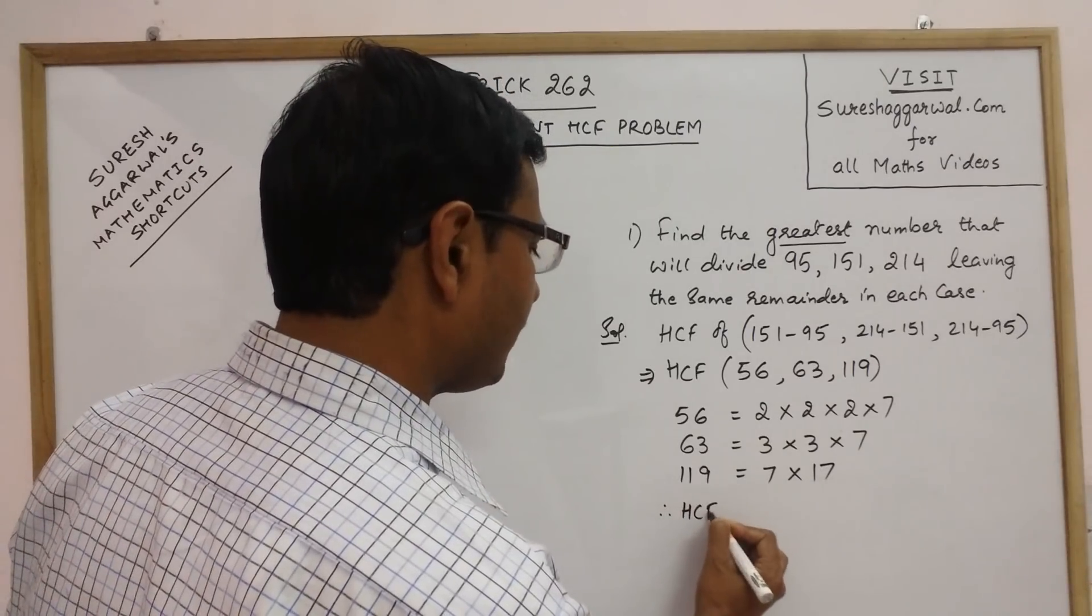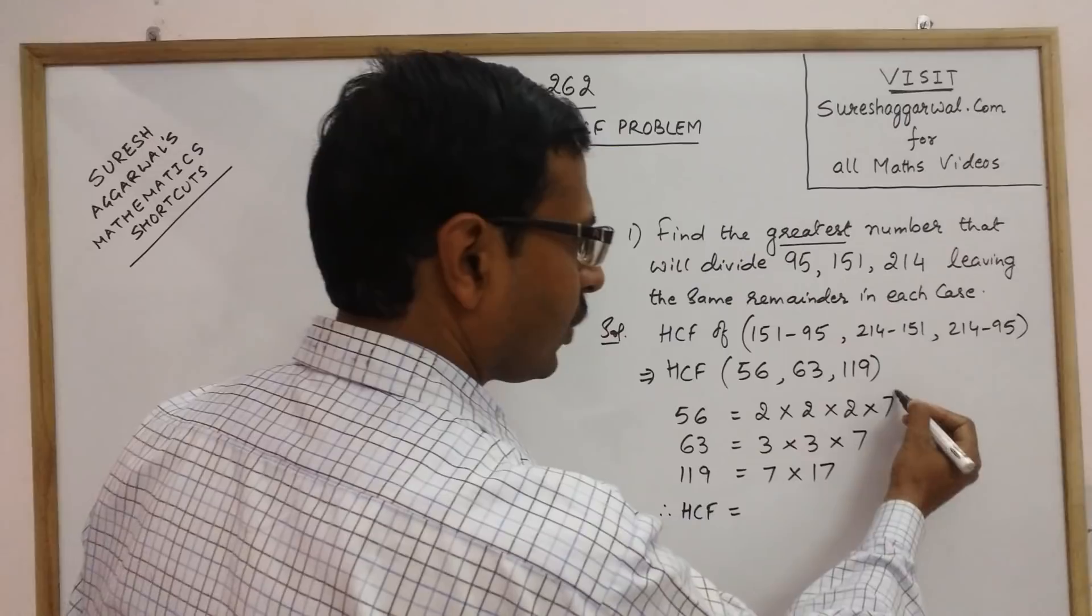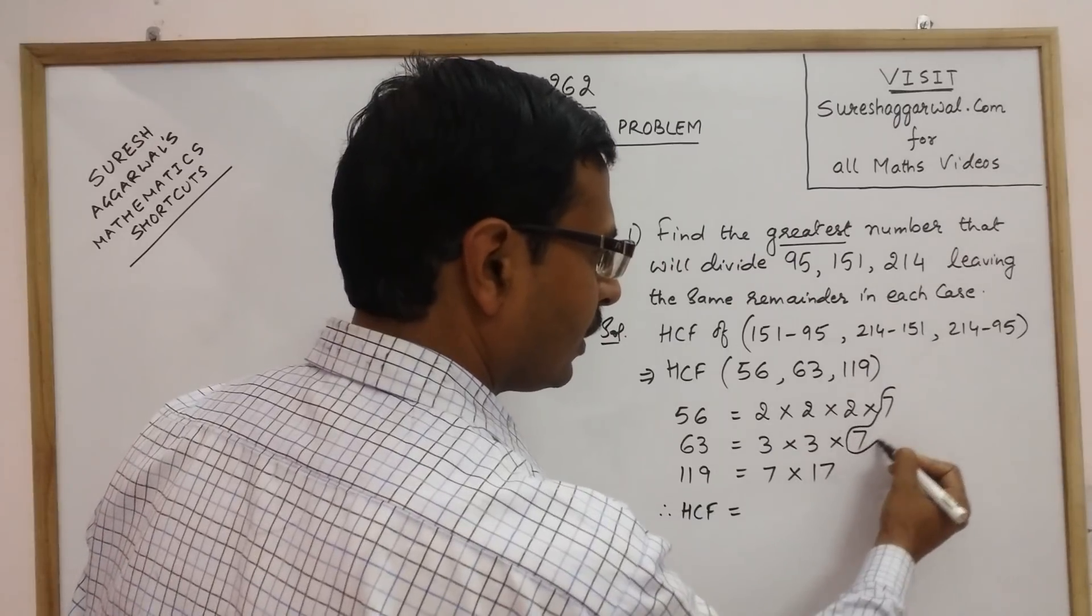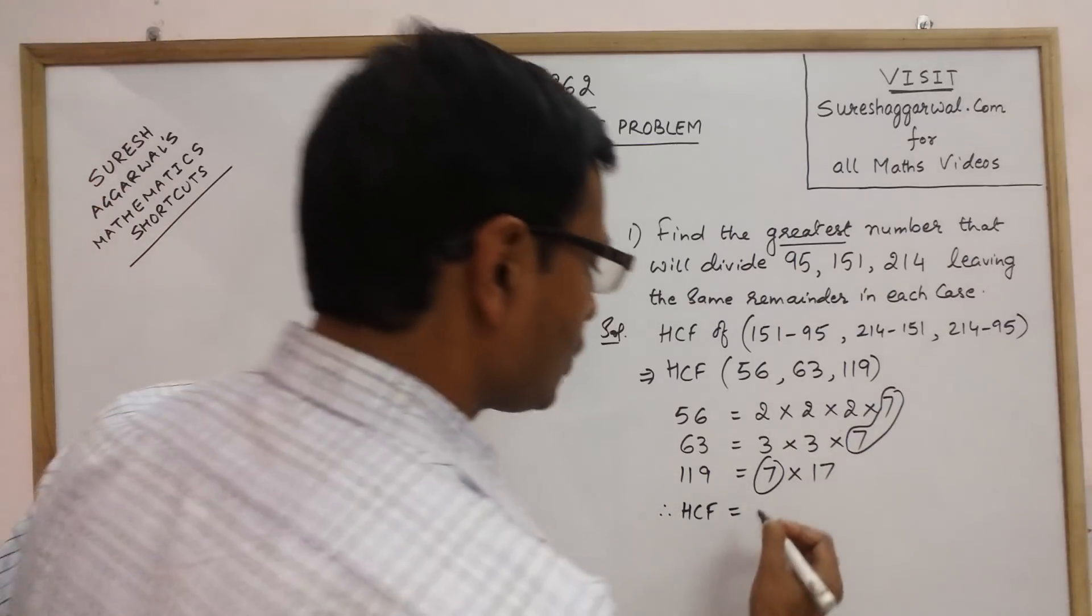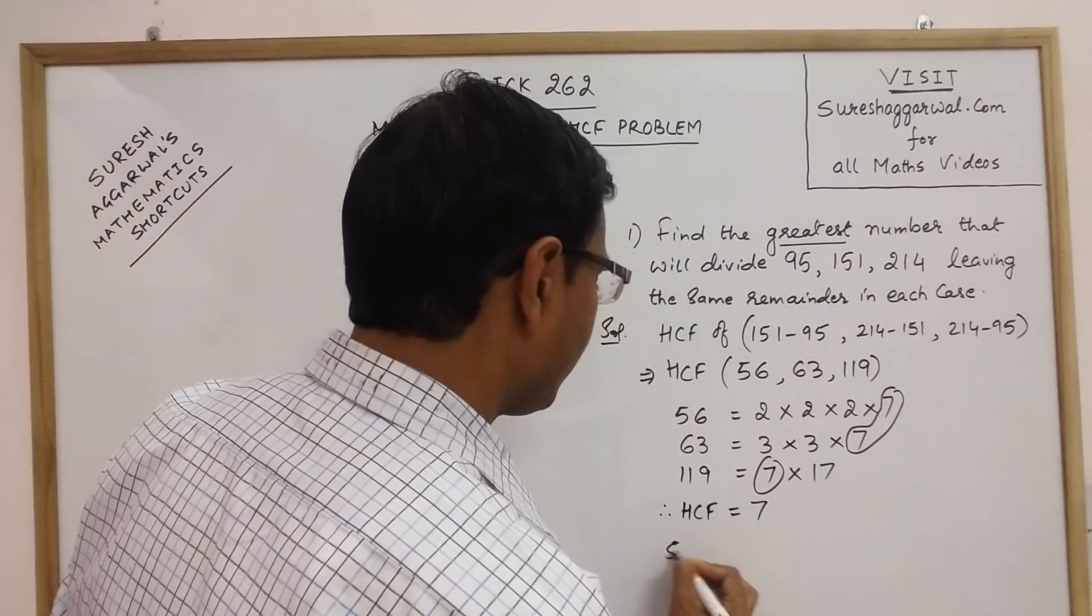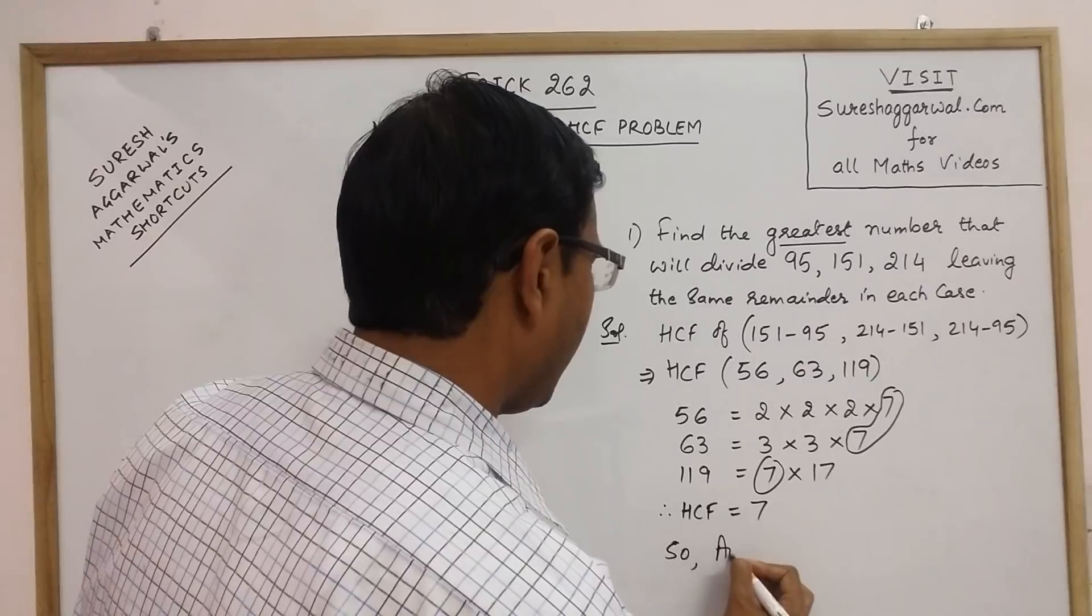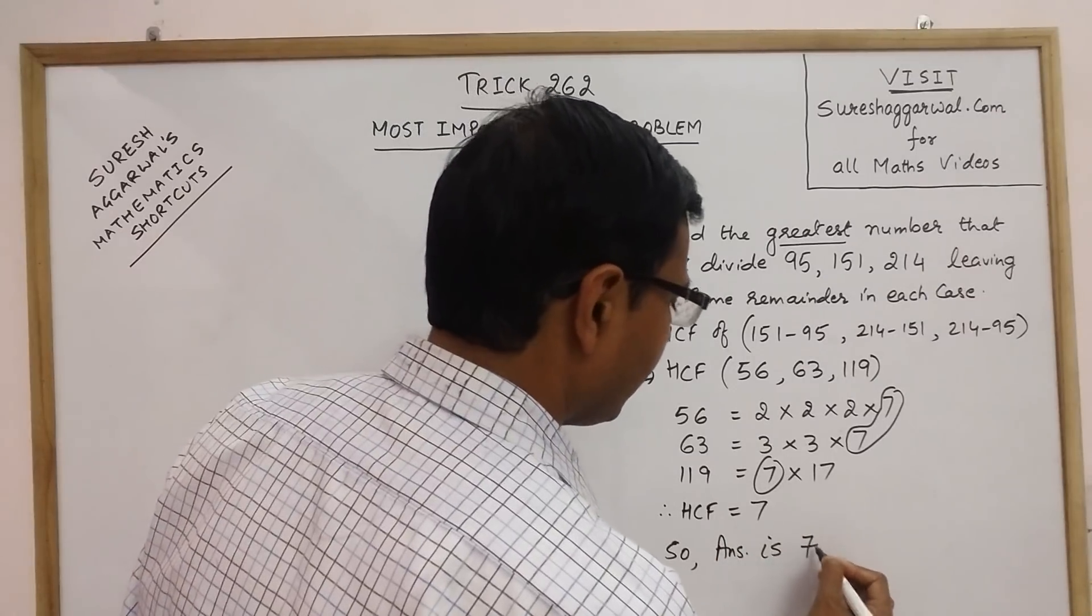Therefore, the HCF of the numbers is the common factor of the three numbers. Only common factor is 7. So HCF is 7. So the answer to this question is 7.